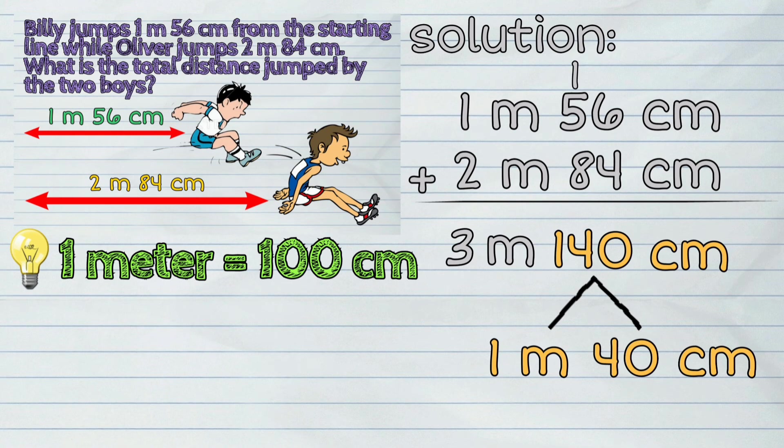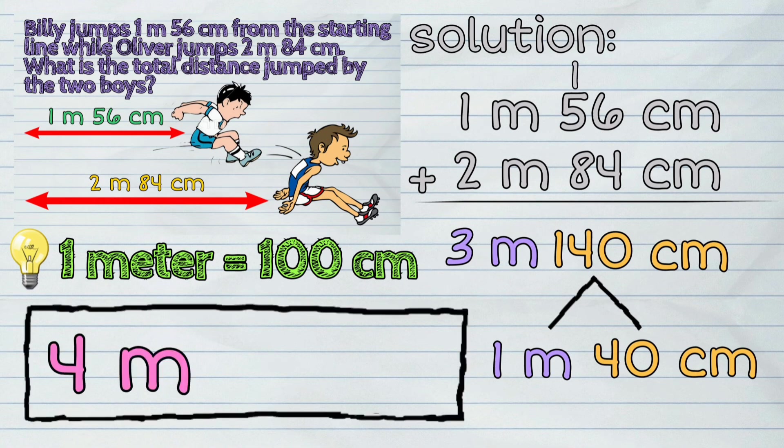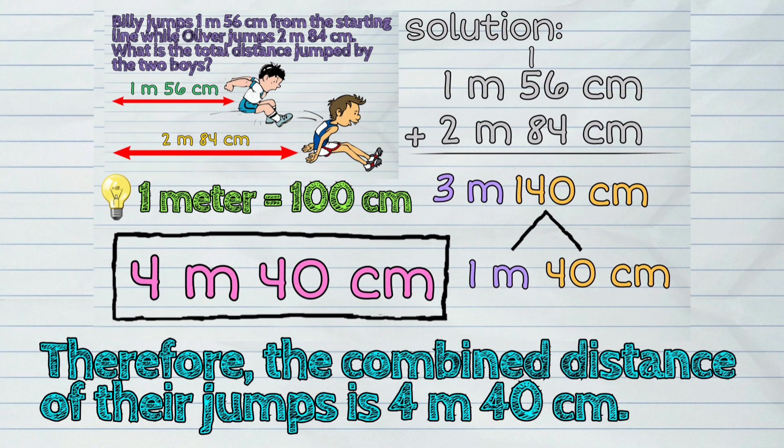Because of this, we will add 1 meter to 3 meters, making it 4 meters. Then copy the remaining 40 centimeters. Therefore, the combined distance of their jumps is 4 meters and 40 centimeters.